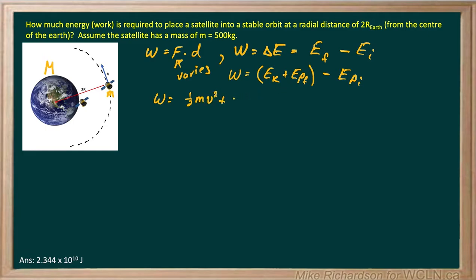Now, we know that potential energy is negative. Negative G little m big M over the separation between the two, which when we're at the final position is 2R. So those two combined make my final energy, kinetic and potential. And my initial energy is negative G m M. And the distance there is just R. So there's my basic equation.